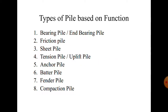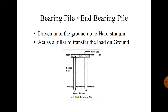There are eight types of pile based on function. First is a bearing pile, also called end bearing pile. Second is friction pile. Third is sheet pile. Fourth is tension pile or uplift pile. Fifth is anchor pile. Sixth is batter pile. Seventh is fender pile. Eighth is compaction pile. For end bearing pile, the pile is driven into the ground up to a hard stratum. It acts as a pillar to transfer the load to the ground, similar to a circular column.